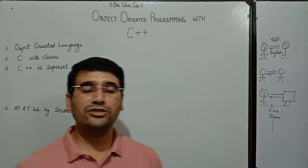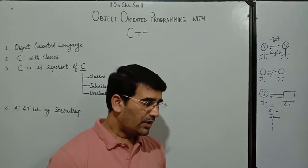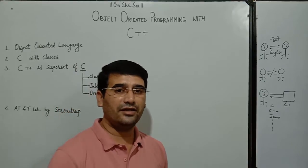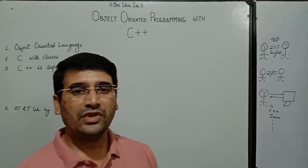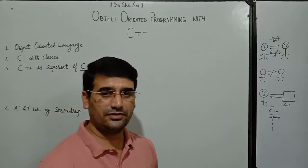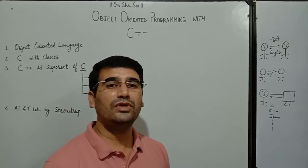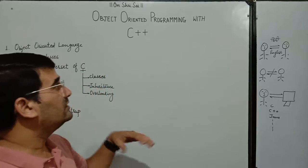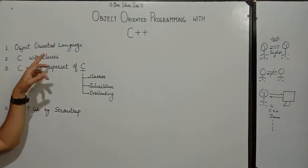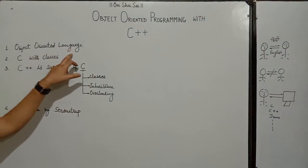These are the concepts, conceptual terms. But if we want to implement these conceptual terms in reality with the help of the computer, then we require a language which supports these concepts to convert it into reality. And that language is known as, or that language is C++, we will use that. So, the C++ is an object-oriented language.